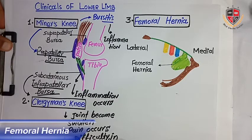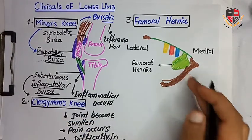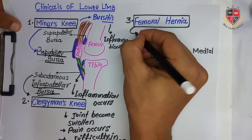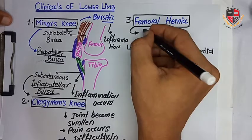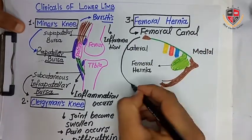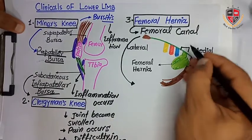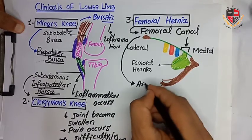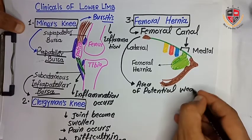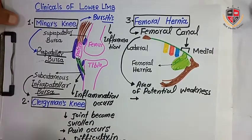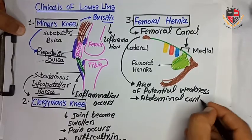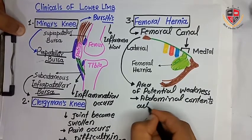The next clinical is femoral hernia. Hernias are the bulging out of abdominal contents into the pelvis through any weak area. This weak area may be a thinning of the muscle or wall of the abdomen. The femoral canal is an area of severe potential weakness through which abdominal contents may bulge out, forming a femoral hernia.